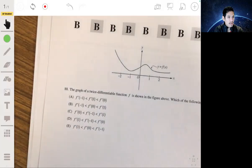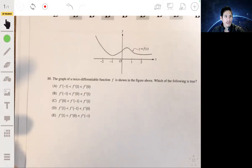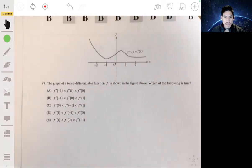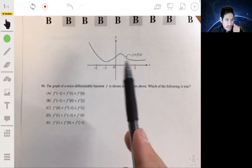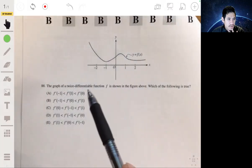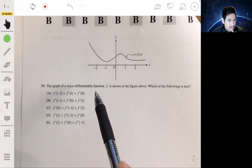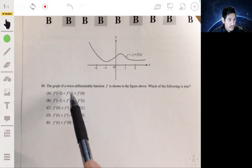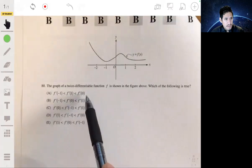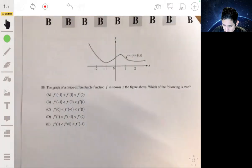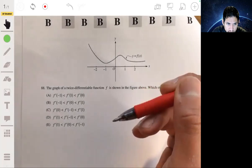Problem 88. Right here, we just want to analyze this. We have the graph of the twice-differentiable function f of x shown here, and we need to see which is true. So it looks like we're studying, we're comparing the derivative values at negative 1, 1, and 0. So let's just draw tangent lines at negative 1, 1, and 0.